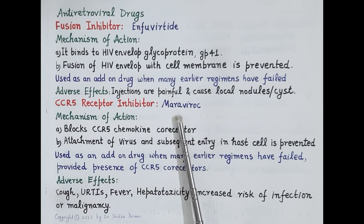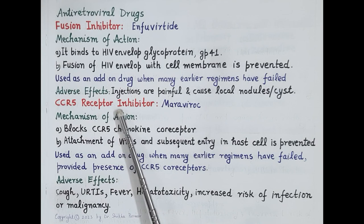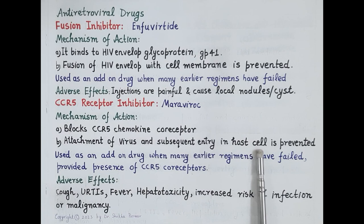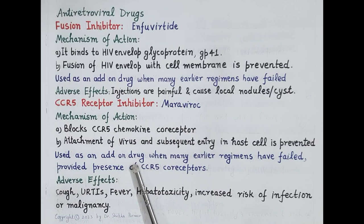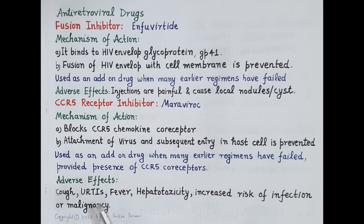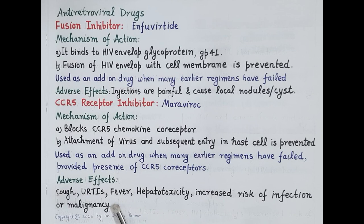Another antiretroviral drug is maraviroc — a CCR5 receptor antagonist. Maraviroc blocks CCR5 chemokine co-receptors, so attachment of the virus to the host cell and subsequent entry into the host cell is prevented. Maraviroc is also used as an add-on drug, added to a particular antiviral regimen only in selected patients where many earlier regimens have already failed, and should be used only in the presence of CCR5 co-receptors. Adverse effects include cough, upper respiratory tract infections, fever, hepatotoxicity, and increased risk of infections and malignancy.